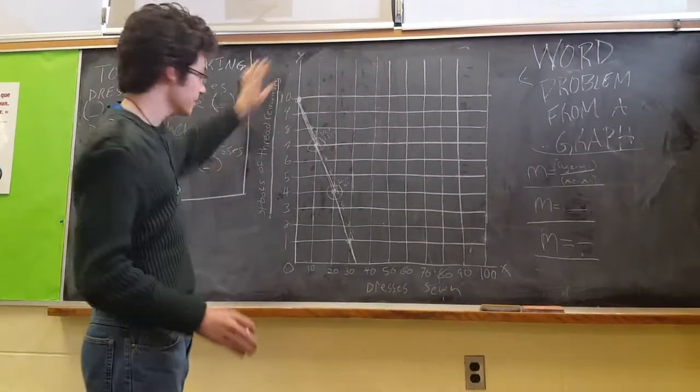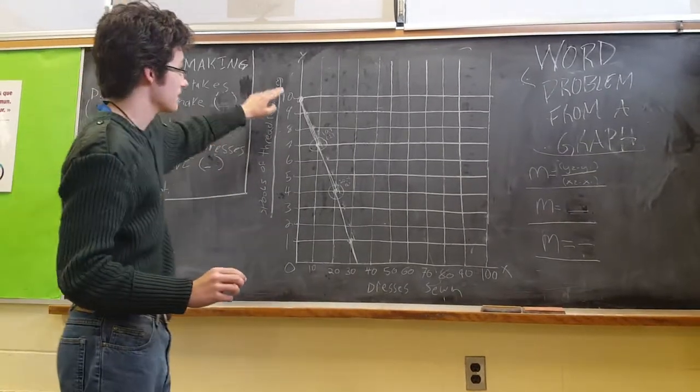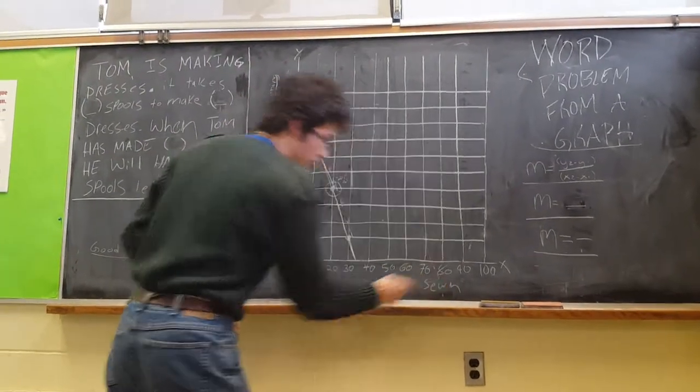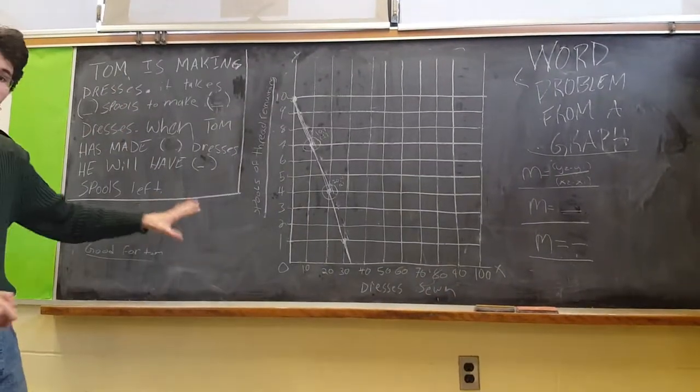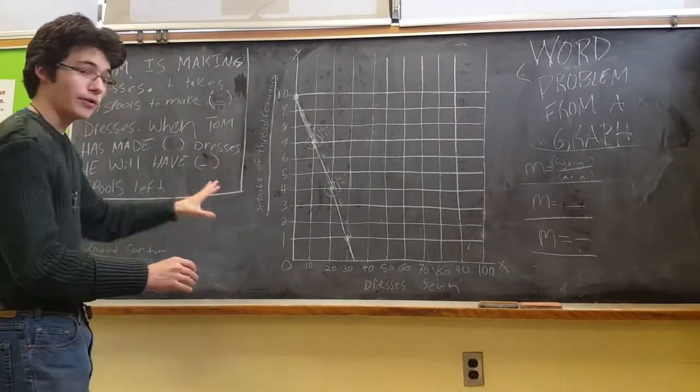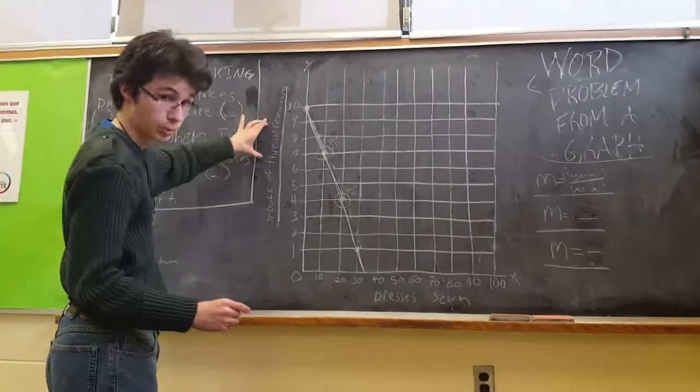On the y-axis, we have spools of thread remaining. We're starting with 10, and that is the y-axis. Down here on the x-axis, we have dresses sewn. So already, we have information about the graph. We know that it is going to be about someone trying to make dresses with a certain amount of spools.